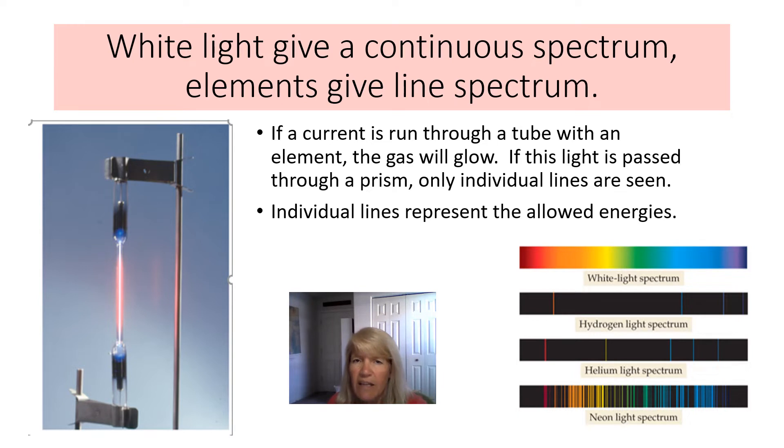So when you look at white light, like the light from the sun, what you get is something called a continuous spectrum that looks like that, where you can see all the colors blending into each other.